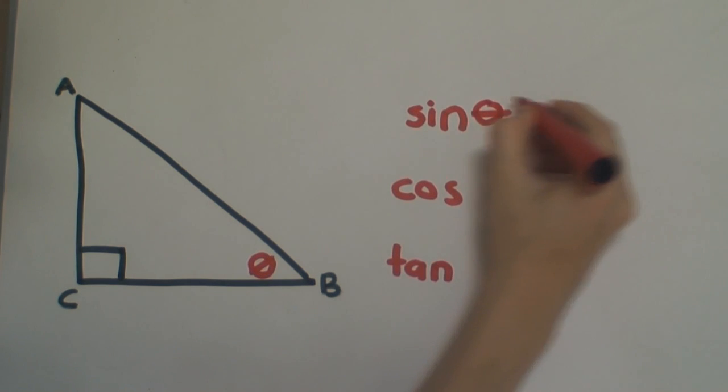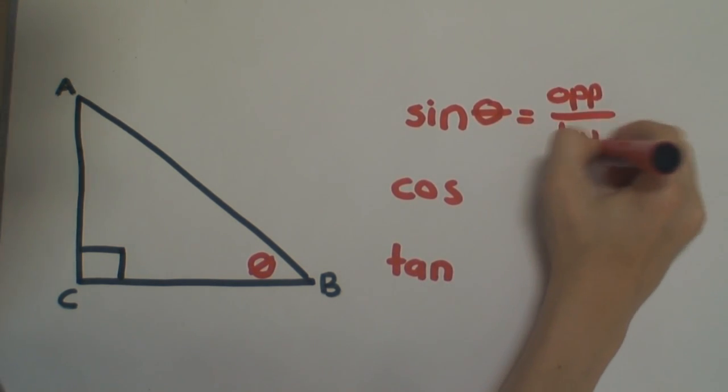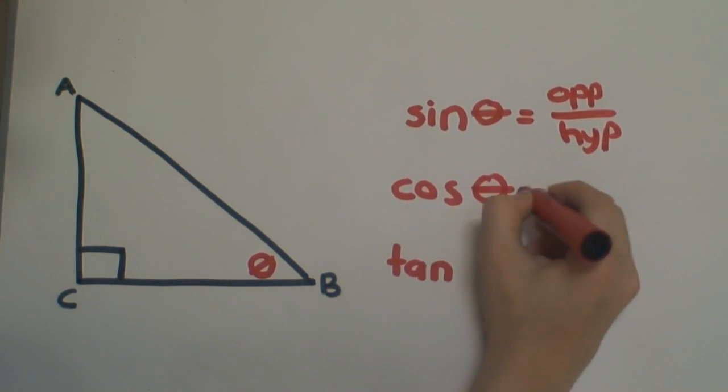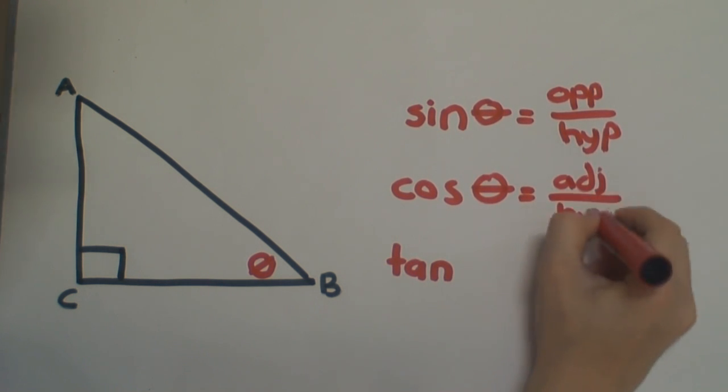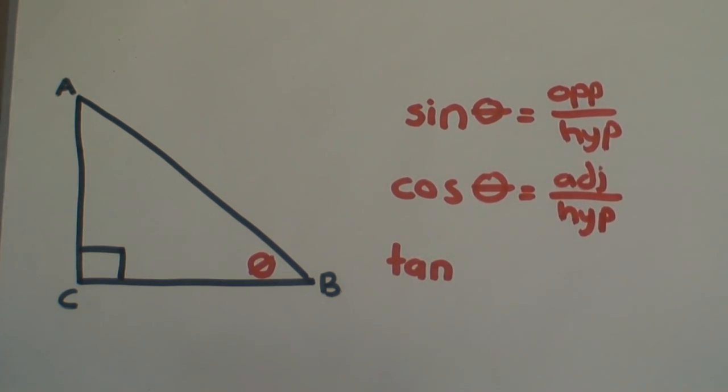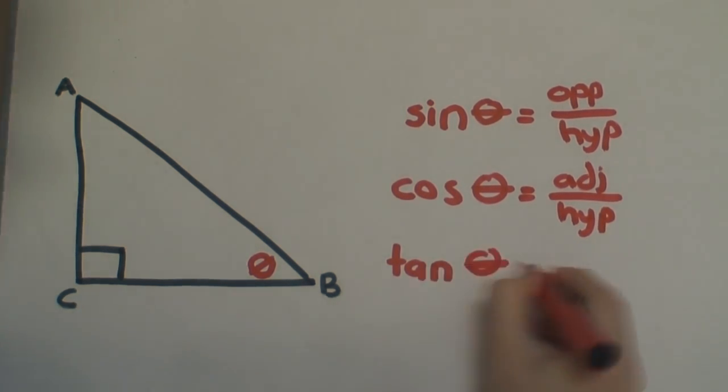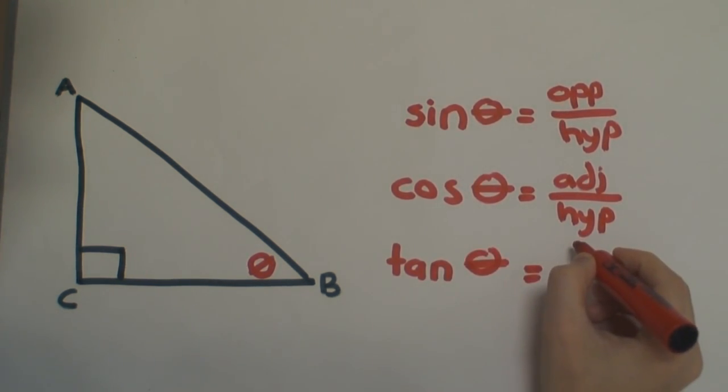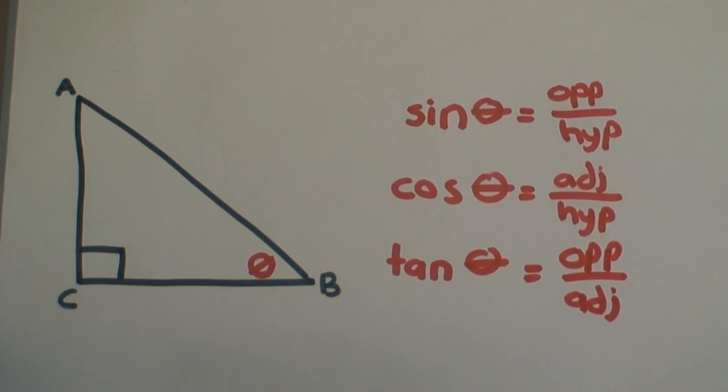The sine function is defined by the ratio between the opposite side and the hypotenuse. The cosine function is defined by the ratio between the adjacent side and the hypotenuse. The tangent function is defined by the ratio between the opposite side and the adjacent side.